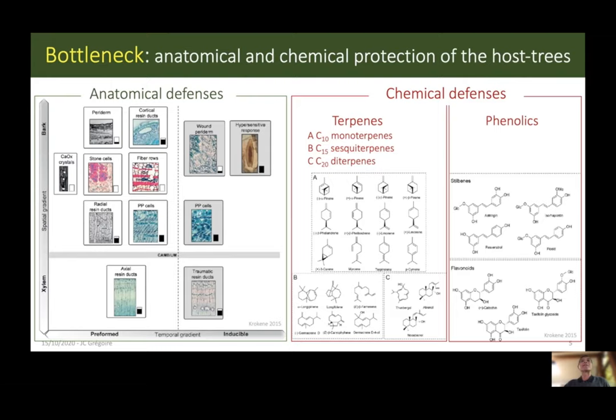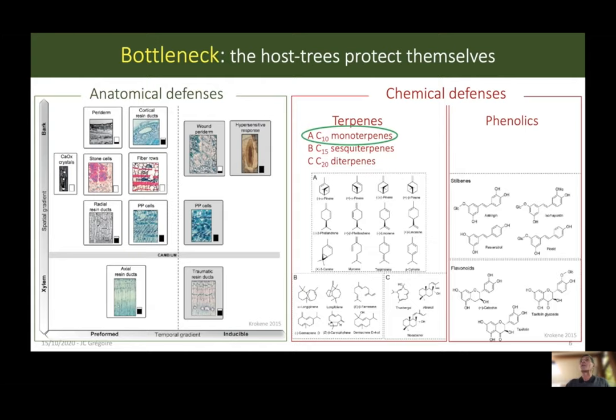At the basis of the trophic web is the host tree. The spruce and conifers in general have both preformed and inducible defenses. There are mechanical defenses such as stone cells, crystals, and fibers, and there are chemical defenses, most belonging to two categories: terpenes and phenolics. In this simplified view, I'm going to concentrate on monoterpenes. Monoterpenes could be extremely toxic to many insects, and we conducted toxicity tests towards bark beetles and some of their associates with Claude Everard's team in Dijon in the late 1980s.